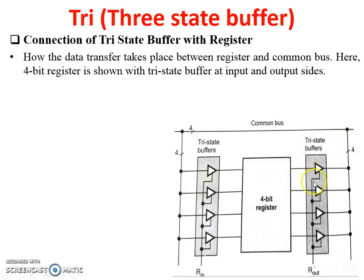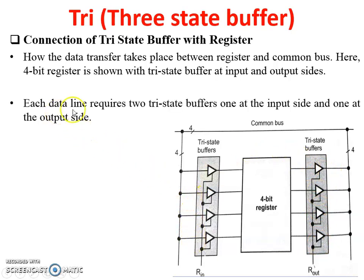The register is connected with the output tri-state buffer. So we can say there are 4 output tri-state buffers and 4 input tri-state buffers. Each data line requires 2 tri-state buffers — one at the input side and one at the output side. You can see here: this is one tri-state buffer for the input and one tri-state buffer for the output. This is one data line.